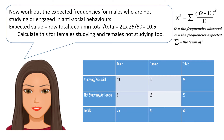Now work out the expected frequencies for males who are not studying or engaged in anti-social behaviours. The expected value is the row total times the column total divided by the overall total. The row total is 21, the column total is 25, and the overall total is 50. So this works out as 10.5.